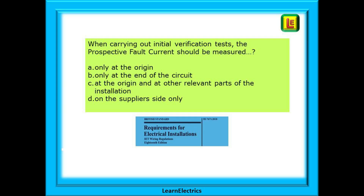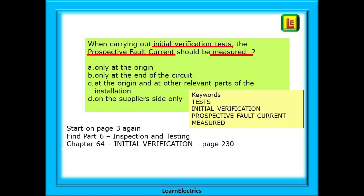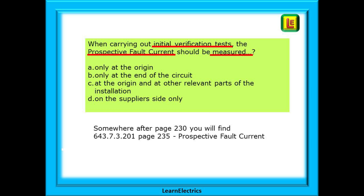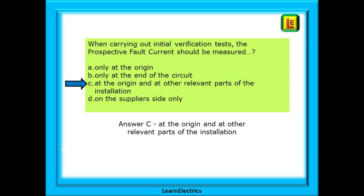Moving on to question 6. When carrying out Initial Verification Tests, the prospective fault current should be measured where? There are lots of keywords here. 'Tests' — so it must be in the Testing section. 'Initial Verification' tells us when it happens. We know it is about measuring the prospective fault current. Begin with page 3, find Part 6, Inspection and Testing, and Chapter 64, Initial Verification, on page 230. We need to do a little searching. We will find regulation 643.7.3.201 in the middle of page 235, titled 'Prospective Fault Current'. The words in the sentence indicate only one possible answer. Our answer is C — at the origin and at other relevant parts of the installation.